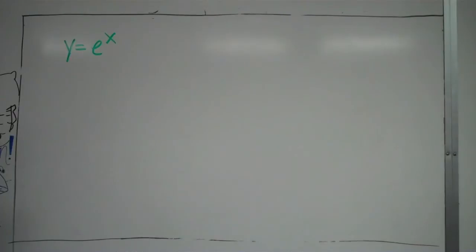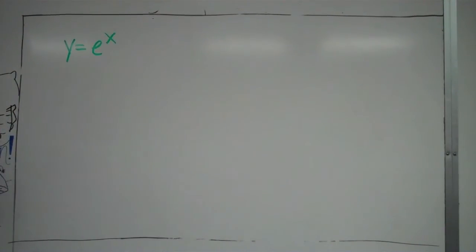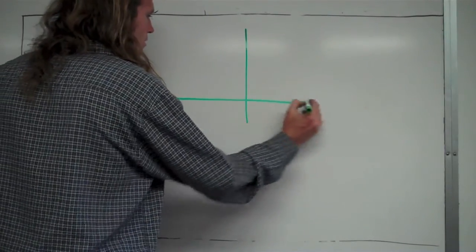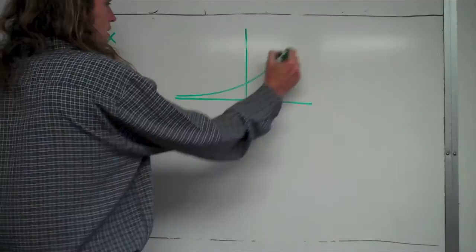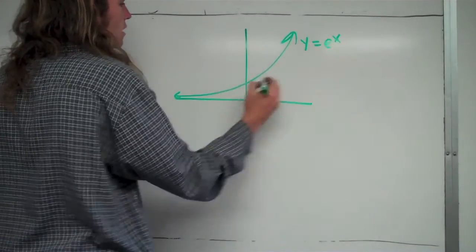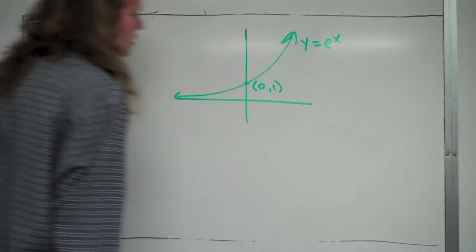So e represents a number, and having it raised to the x power is just, if it's e to the 2, it means that number 2.7 something to the second power. But anyways, you should have an idea of what this graph looks like. That's important to know what it looks like, and this graph looks like this. It's the graph of y equals e to the x, just a general sketch of it. It passes through the point 0, 1. I'll mention that again in just a second.